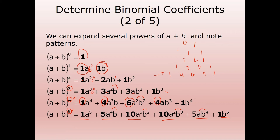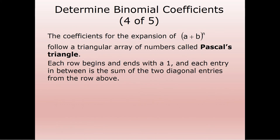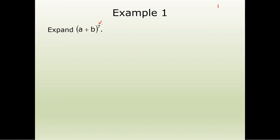Remember, you've got a zeroth row, a first, a second, a third, and a fourth. The first row is the zeroth row and then everyone after that. So for the seventh power, we need eight rows. Row five is one, five, ten, ten, five, one. Row six: one plus five is six, five plus ten is fifteen, ten and ten is twenty, ten and five is fifteen, five and one is six, and one. We need one more row for the seventh power.